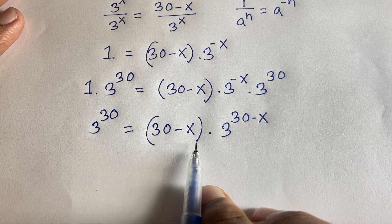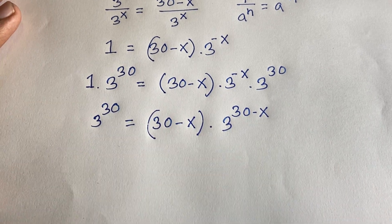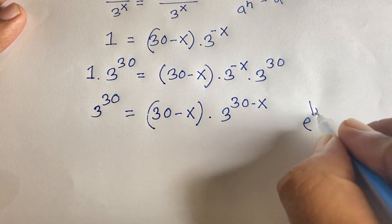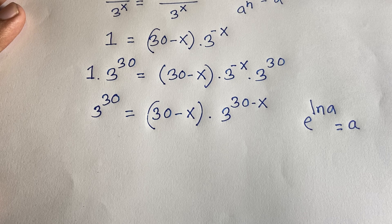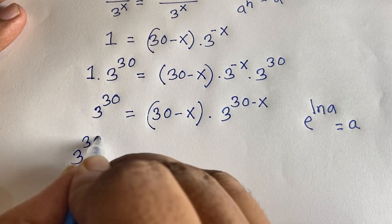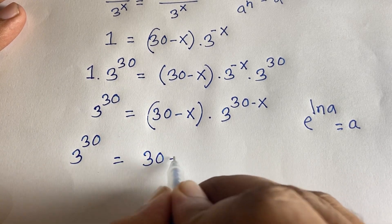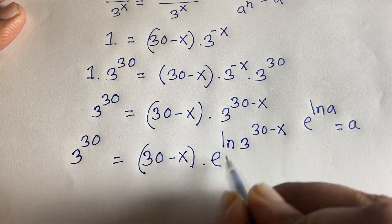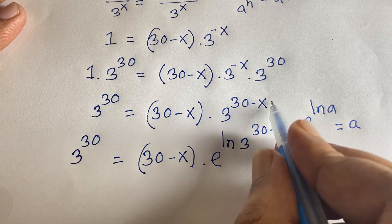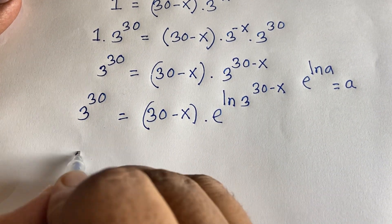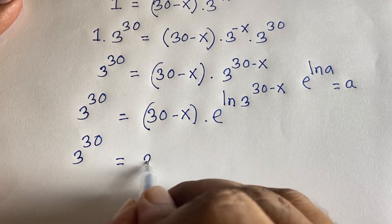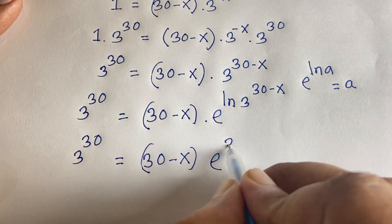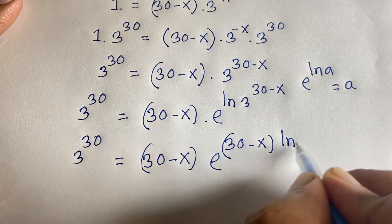At this moment I want to use the Lambert W function. Using the rule e to the power ln(a) equals a, I can write 3 to the power 30 equals (30 minus x) times e to the power ln(3 to the power (30 minus x)). Moving the exponent using logarithm rules gives (30 minus x) times e to the power ((30 minus x) times ln 3).